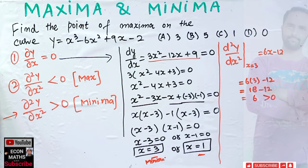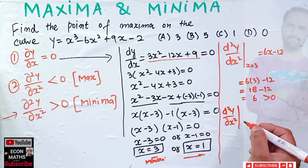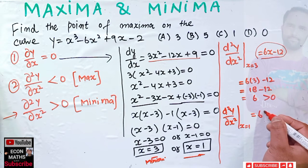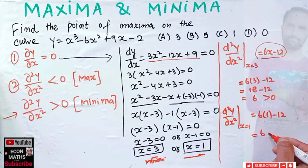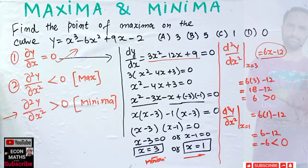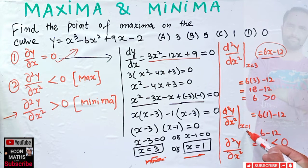Now let's check at x = 1. Evaluating the second derivative 6x - 12 at x = 1: 6(1) - 12 = 6 - 12 = -6, which is less than zero. For maxima, two conditions are required: first derivative equal to zero, and second derivative less than zero. Here the second derivative is less than zero, so x = 1 is the point of maxima.